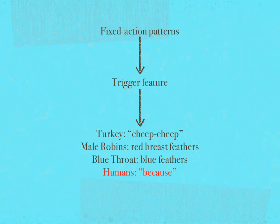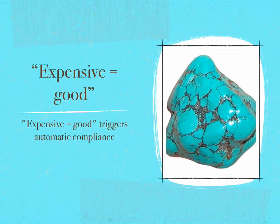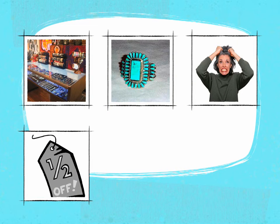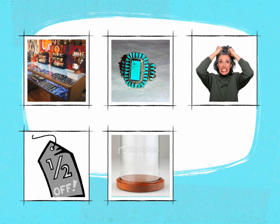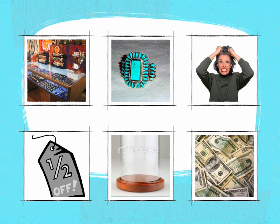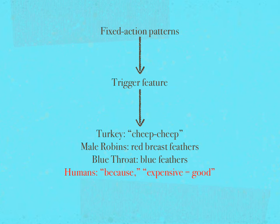The lesson: if you want to cut in line or make a small request, offer a reason — but make sure you say because. Expensive equals good is another trigger for automatic compliance. For example, Cialdini's friend who recently opened an Indian jewelry store in Arizona was having trouble selling her turquoise pieces. The night before an out-of-town trip, she scribbled a note: "everything in this display case — price times one-half." When she returned, the turquoise was sold out, but her employee had read "one-half" as a two, selling the entire allotment at twice the original price.